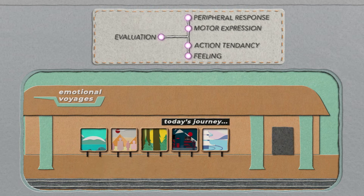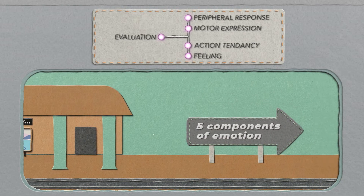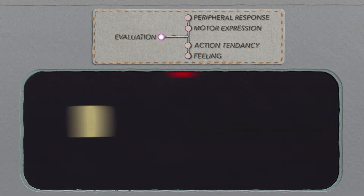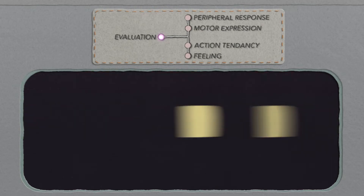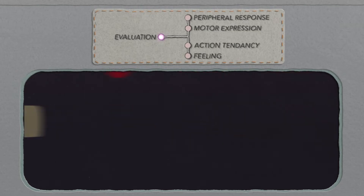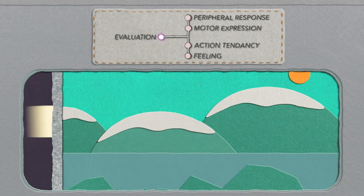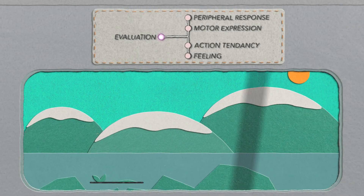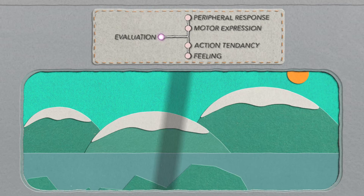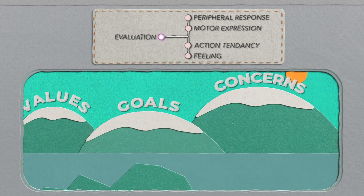Every emotion consists of these five components in our body. Let's begin with the first component: the evaluation of the event that triggers the emotion. Only events, real or imagined, that we evaluate as important to us can trigger an emotion. In particular, we evaluate the relevance of this event by relating it to our goals, concerns, or values.